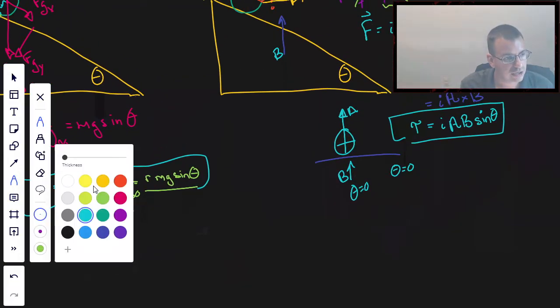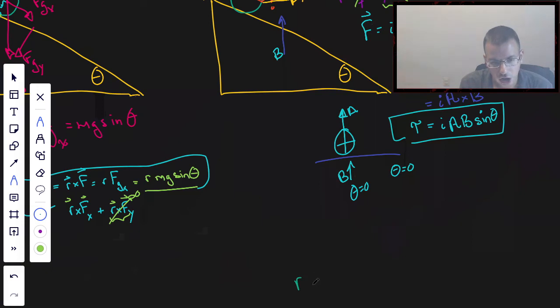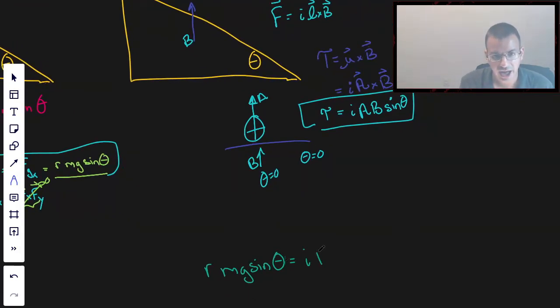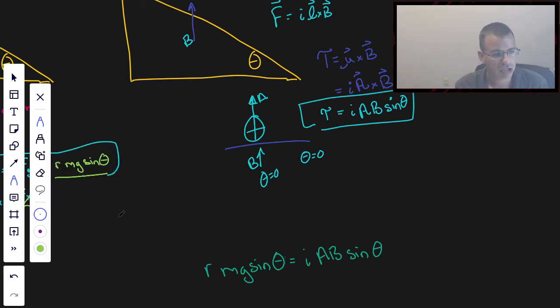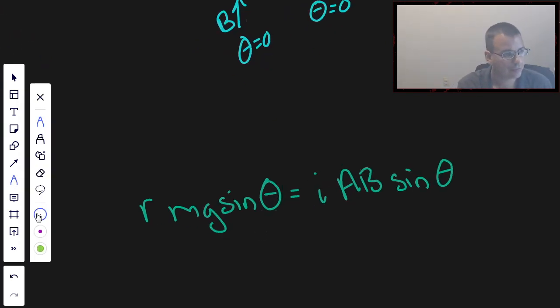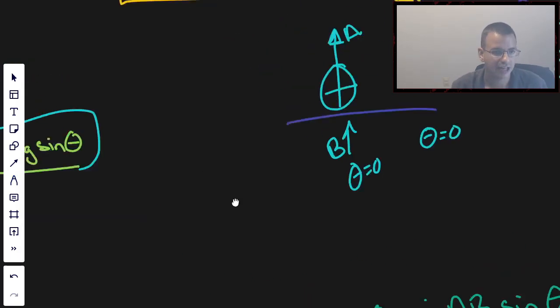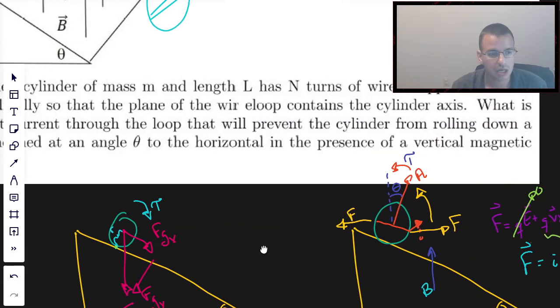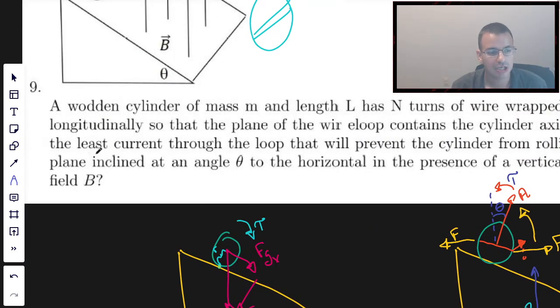And so we can set these two equal to each other. And so I am going to say that R×M×G×sin(theta), this is the torque causing our cylinder roll down the inclined plane, equals I×A×B×sin(theta). This is the torque causing it to roll up the plane, which another way of phrasing that is causing the normal vector to the area of the coil to align with the magnetic field, which happens to be up the plane. We are looking for the minimum current, least current.